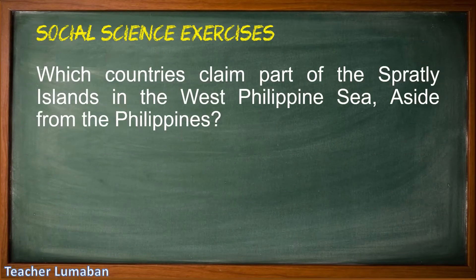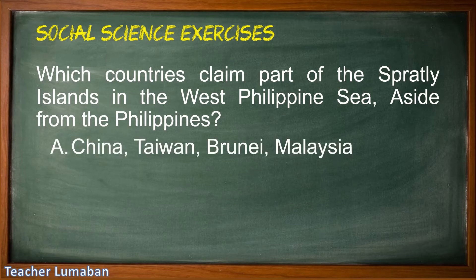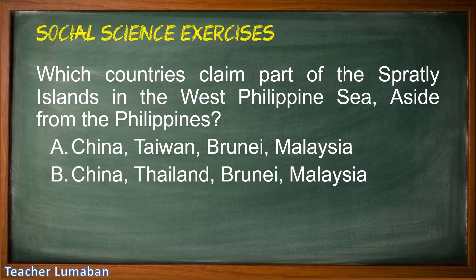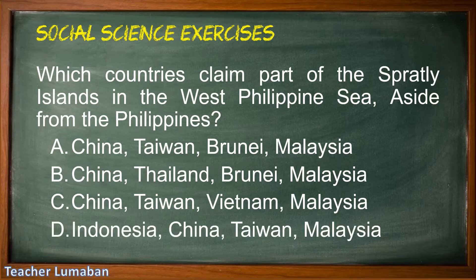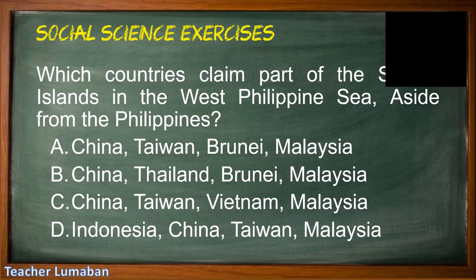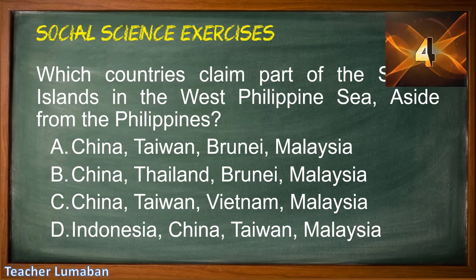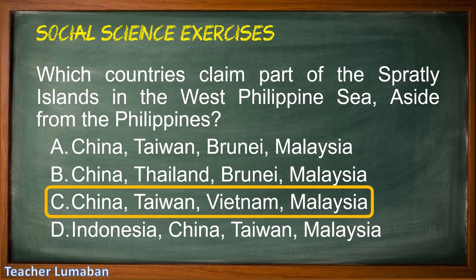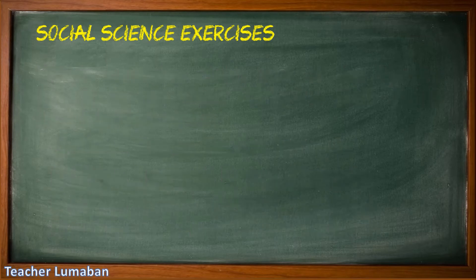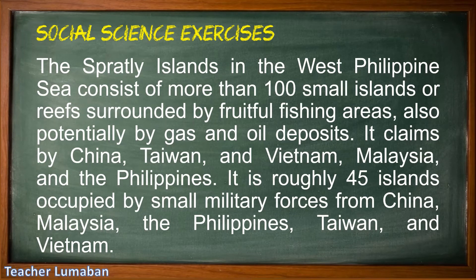Which countries claim part of the Spratly Islands in the West Philippine Sea, aside from the Philippines? Letter A: China, Taiwan, Brunei, Malaysia. Letter B: China, Thailand, Brunei, Malaysia. Letter C: China, Taiwan, Vietnam, Malaysia. Please choose the suitable answer in five seconds. Five, four, three, two, one. The correct answer is Letter C: China, Taiwan, Vietnam, Malaysia.